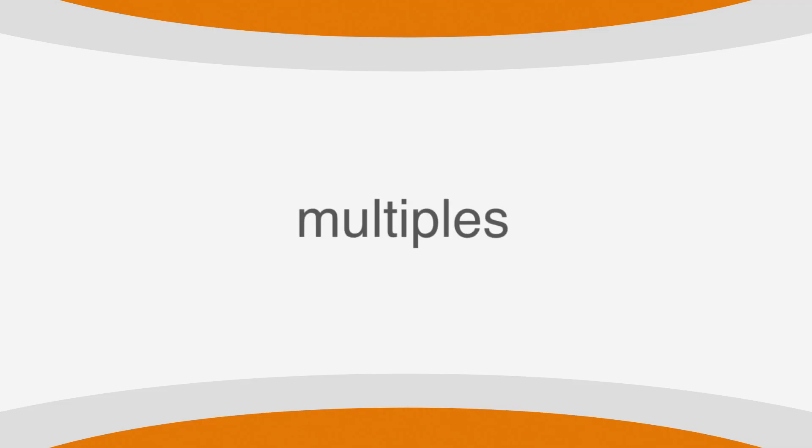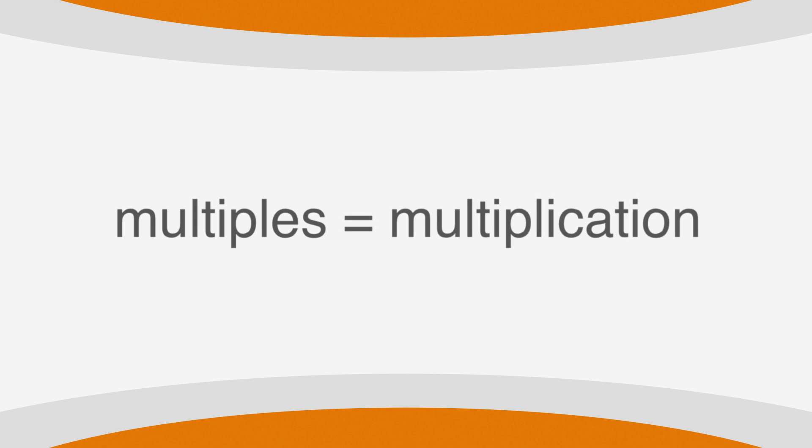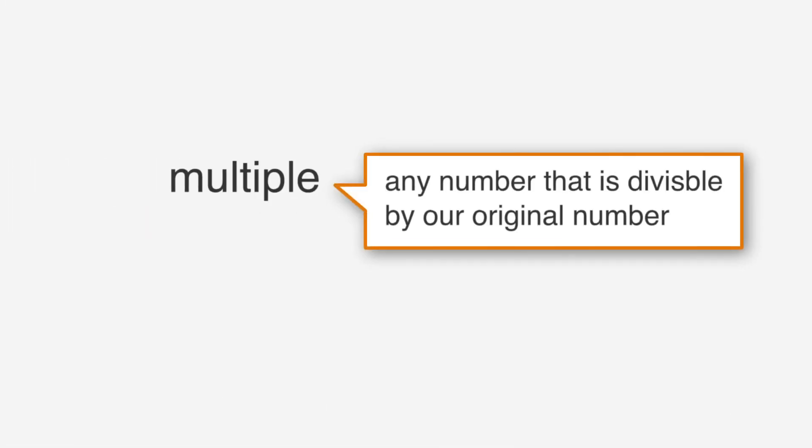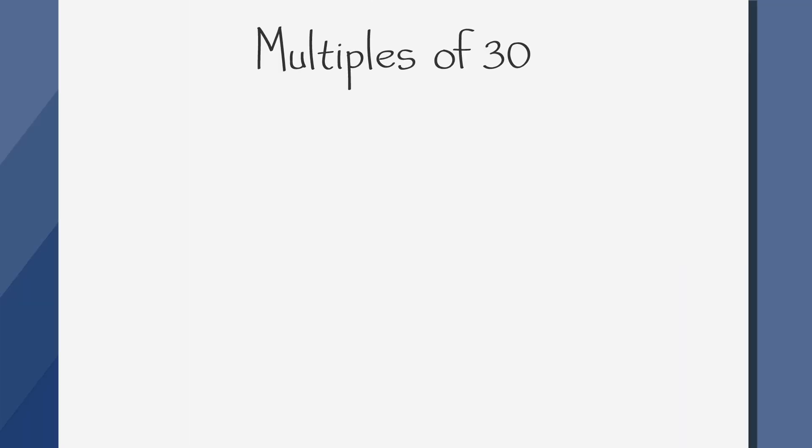Let's take a look at multiples now. When you hear the word multiples, think multiplication. A multiple is any number that is divisible by our original number. The first few positive multiples of 30 are 30, 60, 90, 120, and 150.